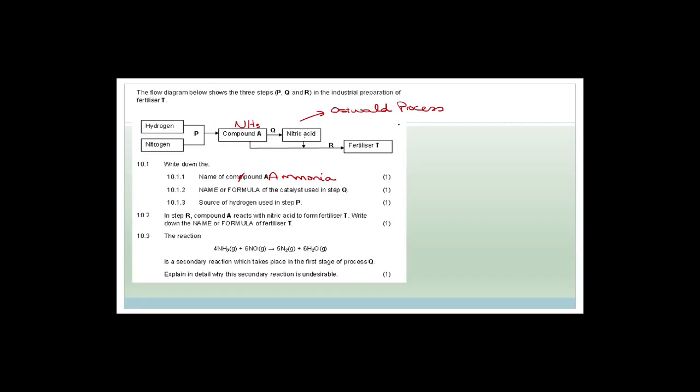Name the catalyst used in step Q. We're going from ammonia NH₃ to nitric acid — that's the Ostwald process. The catalyst for the Ostwald process is iron, Fe. Please remember to learn your catalysts. The source of hydrogen used in step P is from the Sasol syngas process — you could also say from fossil fuels.